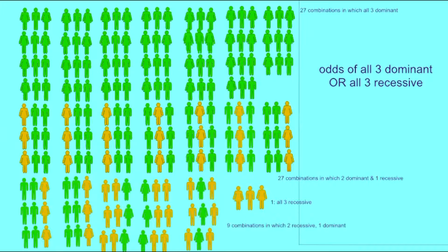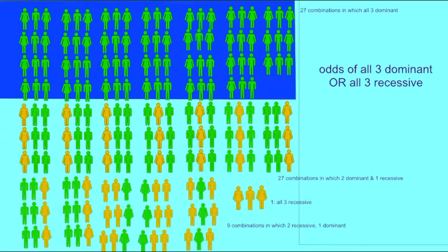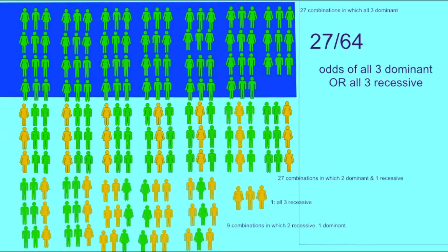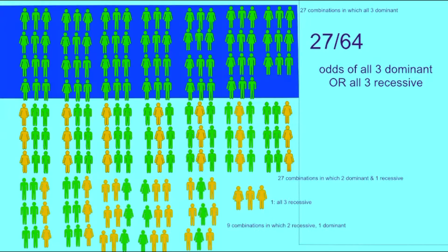If one were to ask, in a family of three children of two carriers for a Mendelian recessive trait, what are the odds that all three would either have the dominant trait or all three would have the recessive trait, then one would take the odds that all three have the dominant trait, which would be 27 over 64.